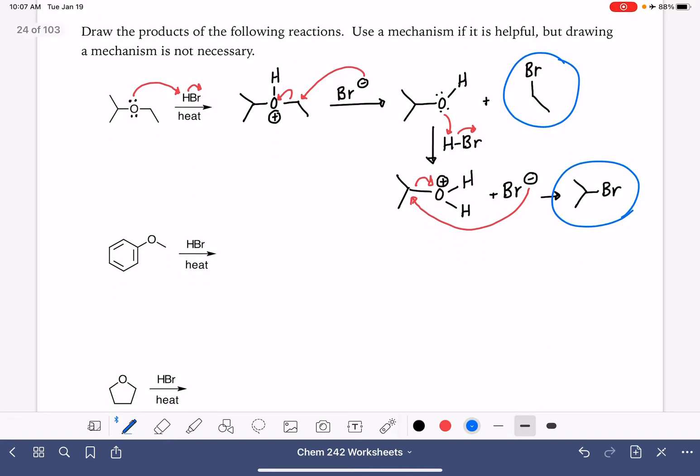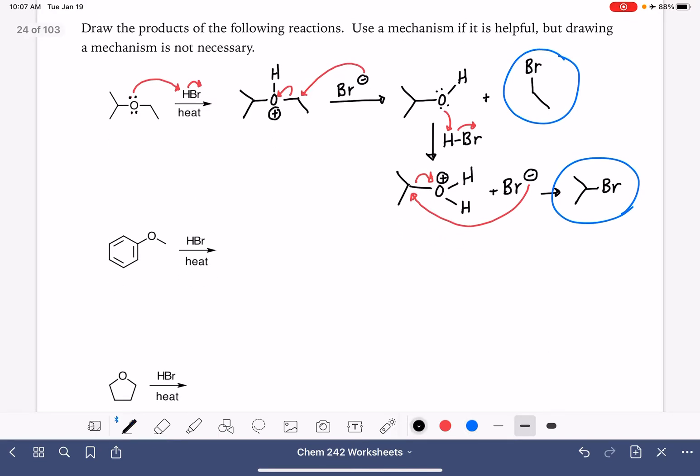Example number two. Anytime you have an oxygen in the presence of a strong acid, you want to begin by protonating that oxygen. It doesn't matter what type of oxygen it is. I'm going to say this over and over again in this video, so hopefully it becomes annoying to the point that you don't forget it.